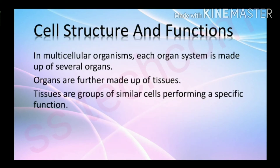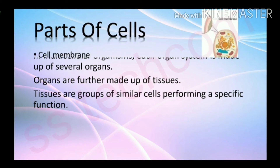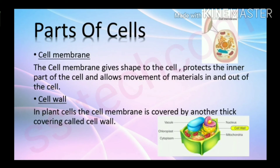Cell structure and functions: in multicellular organisms, each organ system is made up of several organs. Organs are further made of tissues, which are groups of similar cells performing a specific function. Parts of cells: the cell membrane gives shape to the cell.